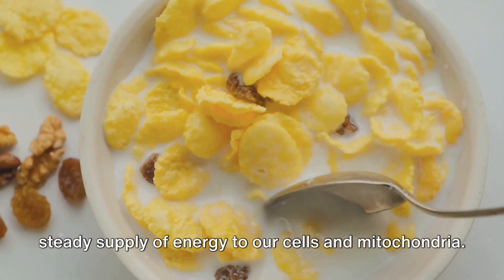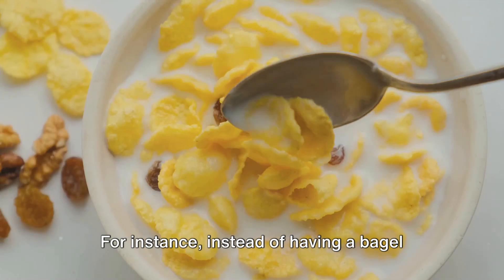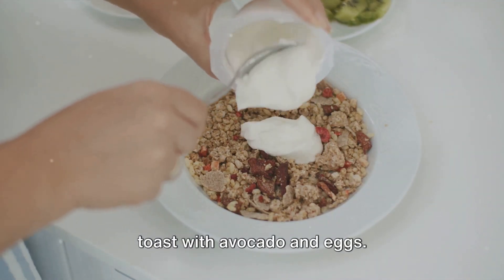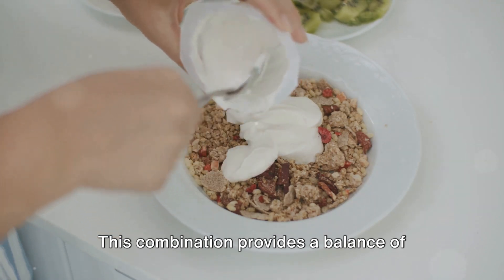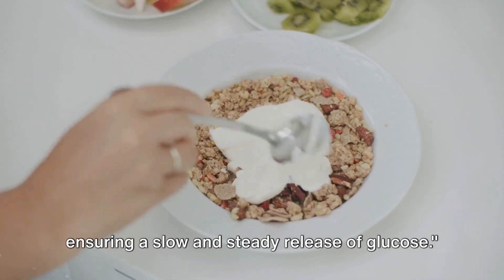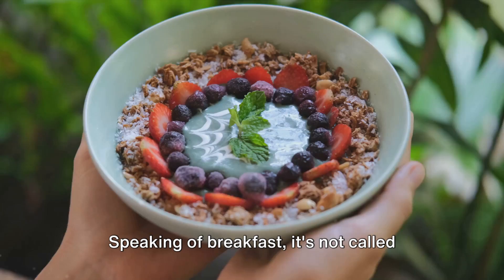For instance, instead of having a bagel for breakfast, try having a whole-grain toast with avocado and eggs. This combination provides a balance of carbohydrates, proteins, and fats, ensuring a slow and steady release of glucose.